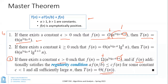There's an additional regularity condition for Case 3 that we'll return to later, but it holds for most practical functions. Let's now look at Case 2 in more detail: it applies when f(n) = Θ(n^(log_b a) · log^k n) for k ≥ 0, not just the simple equal-power case.